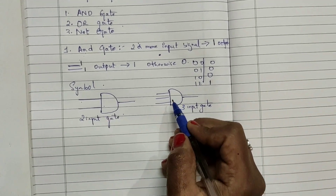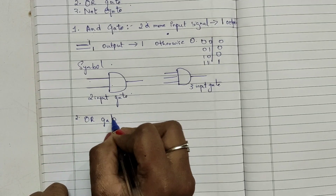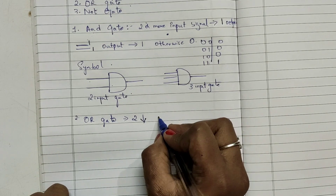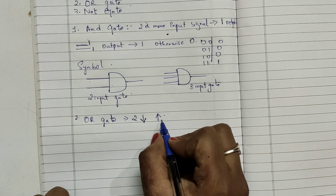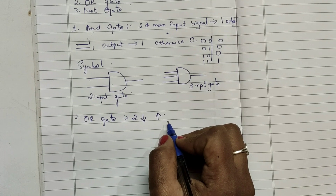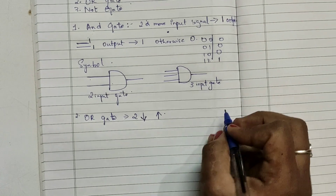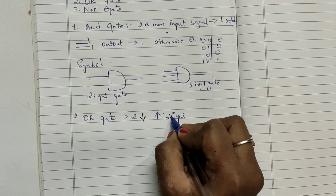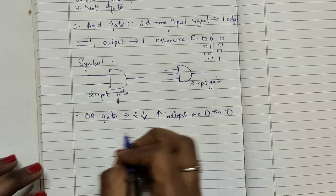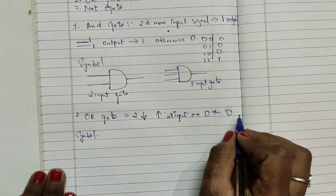Now let's look into the OR gate. OR gate also has two or more input signals and produces one output signal. If any one of the input signals or both is one, then the output signal is one. Only if all the inputs are zero will the output be zero. We have covered how this works in detail in our previous video.